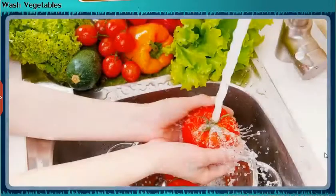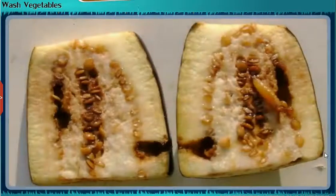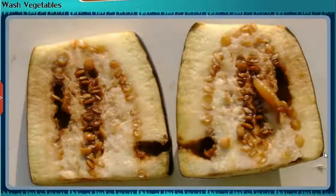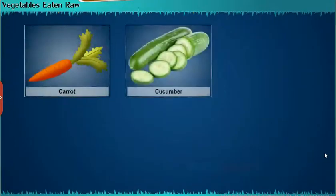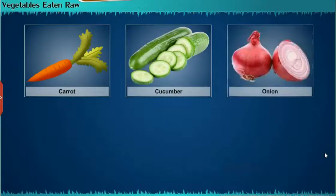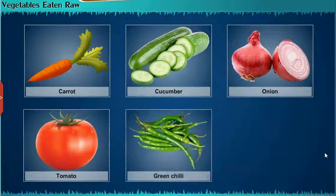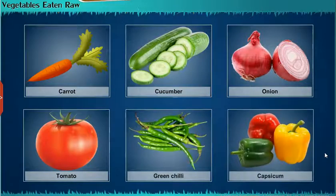Wash the vegetables before cooking them. Check for insects or any contamination while cutting the vegetables. We can also eat some vegetables raw. The vegetables which can be eaten raw are Carrot, Cucumber, Onion, Tomato, Green chilli, and Capsicum.